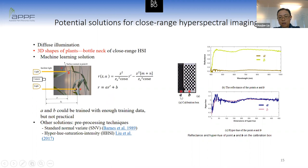For example, points A and B on a calibration board have the same reflectance properties, but point B faces the camera while point A has an angle. Even after calibration, the reflectance of B is higher than A. If we transform the data from reflectance space to a space called the hyperhull, the hyperhull values become more consistent.